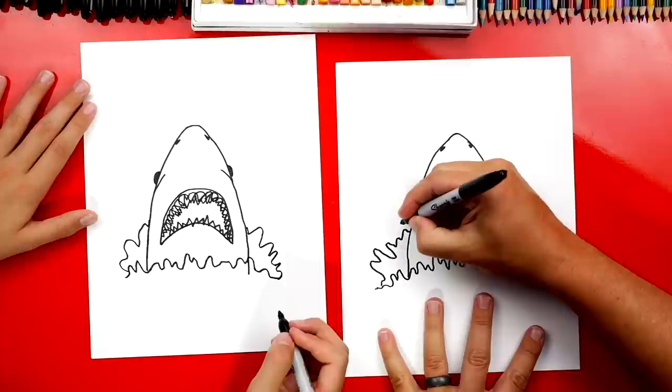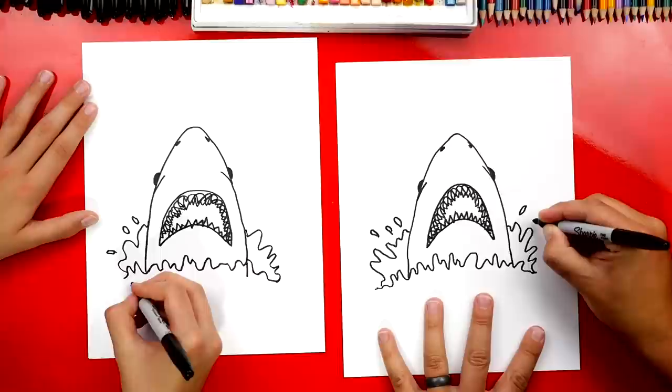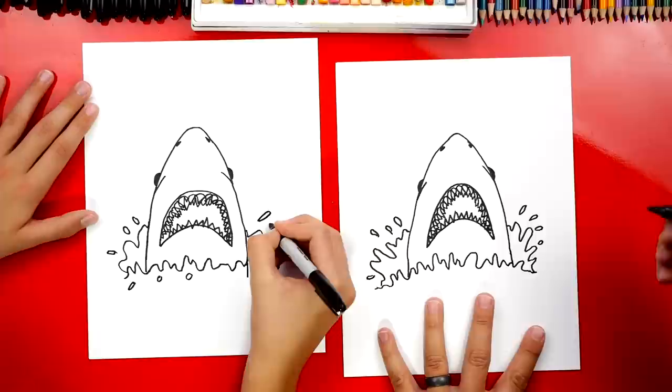Okay now let's draw some splashes or water drops coming off of this big splash. So we can just draw upside down raindrops and you can put them wherever. You don't have to match exactly where I'm putting all of my little drops.